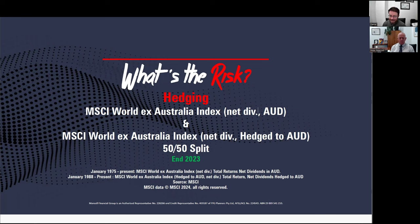This episode is on the MSCI World X Australia Index with net dividends reinvested, and the MSCI World X Australia Index net dividends hedged back in Australian dollars. This is constructed in a 50-50 split and rebalanced annually. Some people would know the ETFs that seek to track the return of these indices as Vanguard's VGS and VGAD — about 1,400 to 1,500 large to mid-cap global stocks in 22 developed markets.